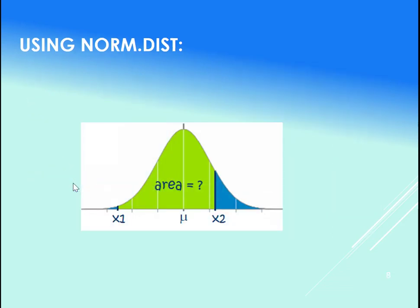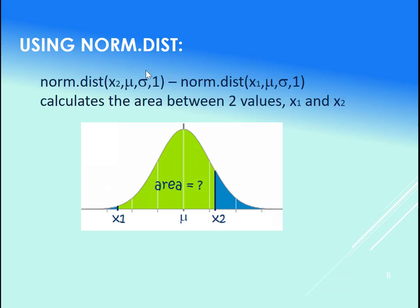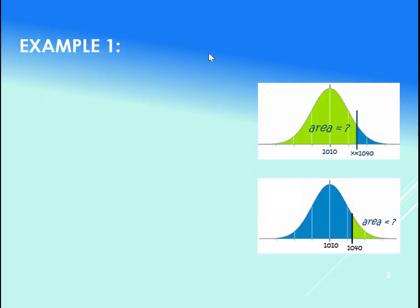What if we want the area between two x values? We subtract the norm.dist—put the largest one first, smallest x value next, subtract those two norm.dist. So let's look at an example.